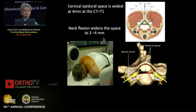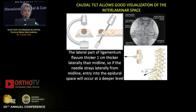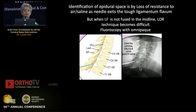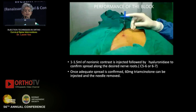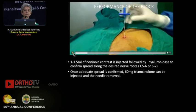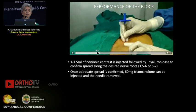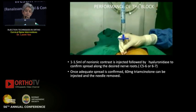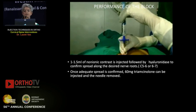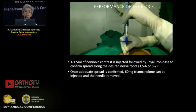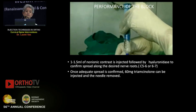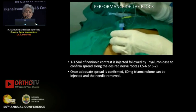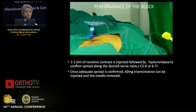Neck flexion widens the epidural space, so prone position with the neck flexed is preferred. Caudal tilt allows good visualization of the interlaminar space. The ligamentum flavum is thicker laterally, so you hit the epidural space at a deeper level. An oblique view can show you where your needle tip target is. After entering the supraspinous ligament, the needle gets fixed, and we proceed with continuous pressure on the syringe using saline to get the loss of resistance. A catheter is then passed to the target level.